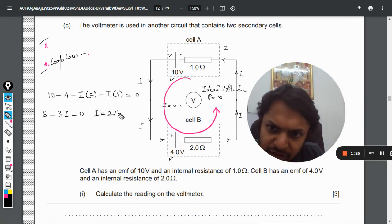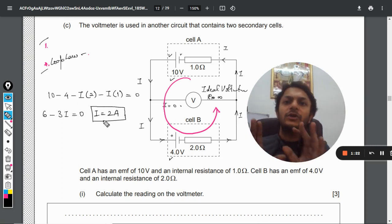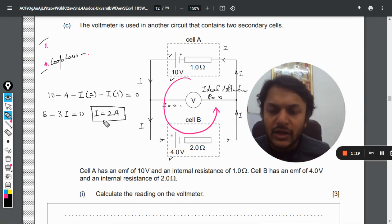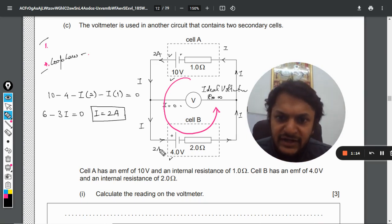And from here we find that the current in the circuit will be equal to 2 ampere. So 2 ampere is the current that is coming out of the battery and 2 ampere is the current that is going into the battery for charging.